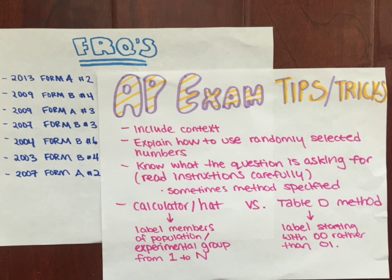Here are some example FRQ problems that you can use to practice on. When doing these AP exam problems, be sure to include the context of the problem. You must connect the randomly selected numbers to selecting your sample or assigning your treatments. Know what the question is asking for and read the instructions carefully, as sometimes there is a specific method you must use. When using the calculator or HAT method, label the numbers of the population or experimental group from 1 to N. In the Table D method, be sure to label starting with 00 rather than 01. Also, remember that the HAT method is often unrealistic when using populations that are extremely large.